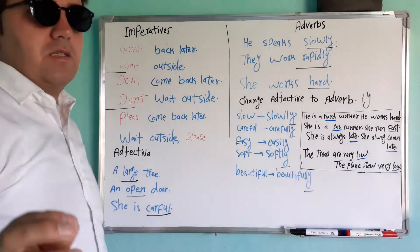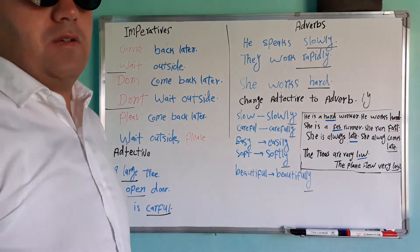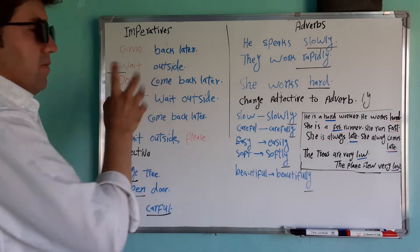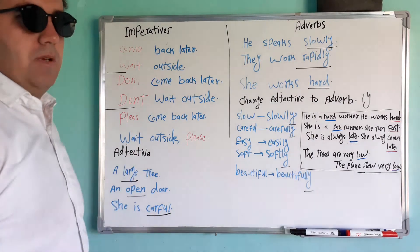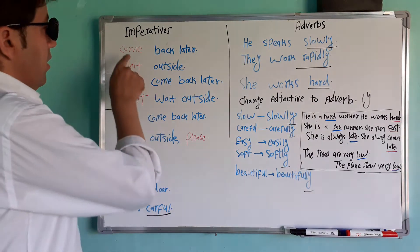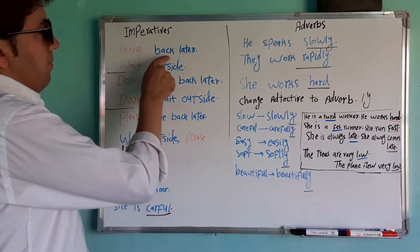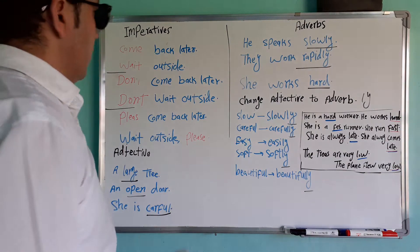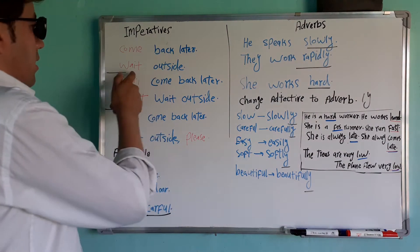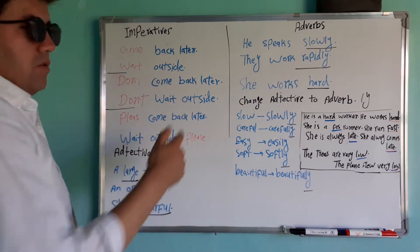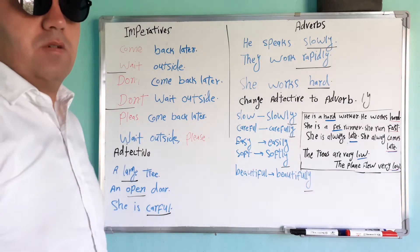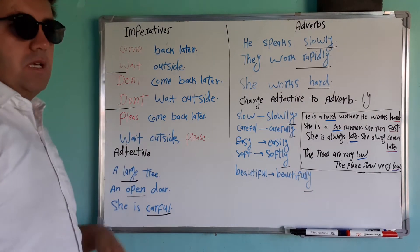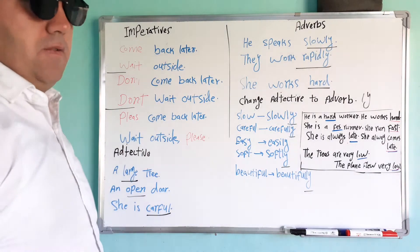چطور میتانی جمله یا sentence ما imperative باشه؟ خیلی ساده، در اول جمله بیا با imperative شروع کن. Like: Come back later — آجیل پس بیا، شد امری. Come back. Wait outside — برون منتظر باش. این بود imperative.